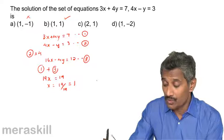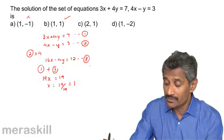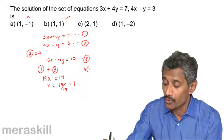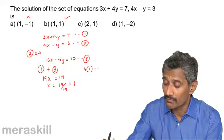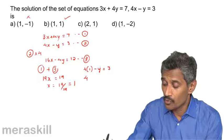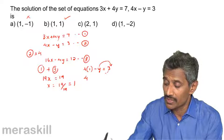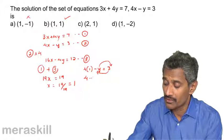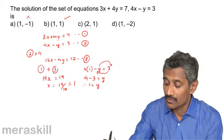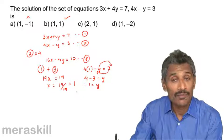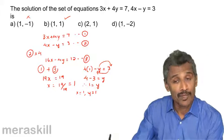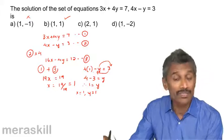So x turns out to be 19 upon 19, which is 1. Now substitute x equals 1 into equation 2: 4 into 1 minus y equals 3, so 4 minus 3 equals y, therefore y equals 1. Hence we get x equals 1 and y equals 1.